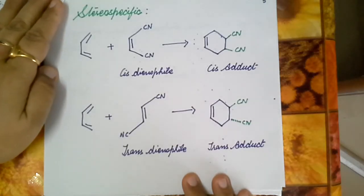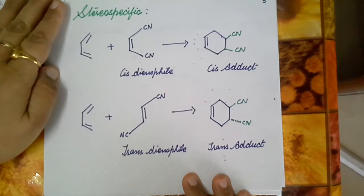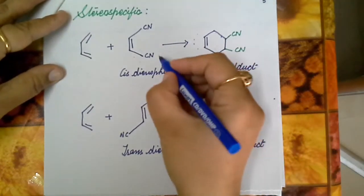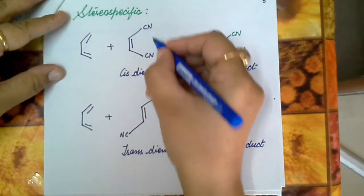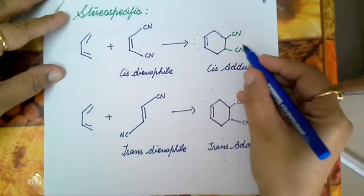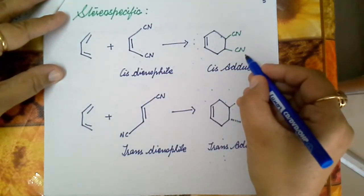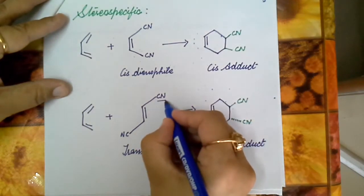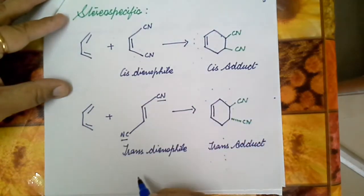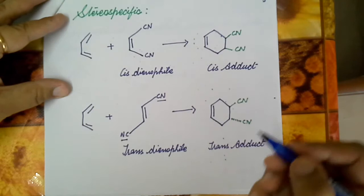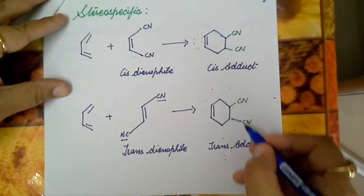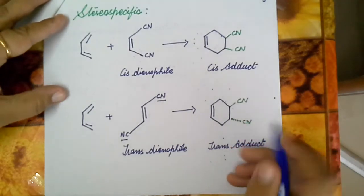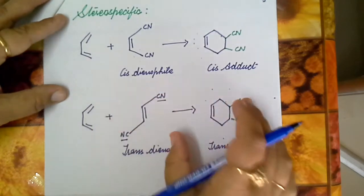These reactions are stereospecific. It means that if the substituents in the dienophile are in cis position, then in the product they will also be present in the cis position only. If these are present in the trans position, then in the adduct or product they will be present in the trans position only — they will maintain their position.